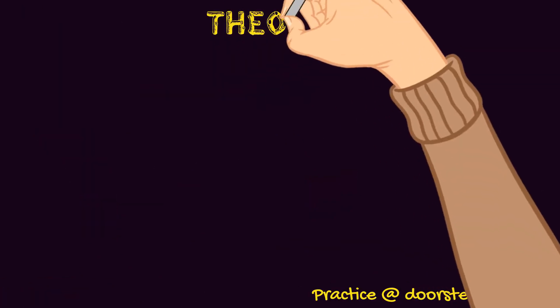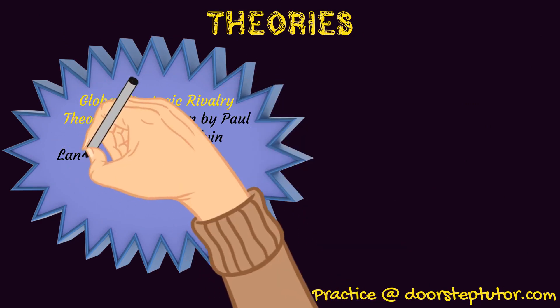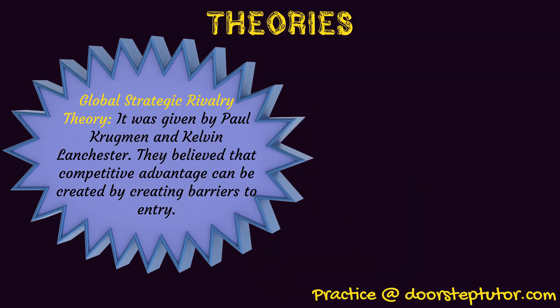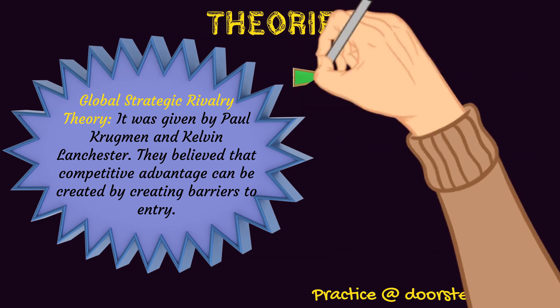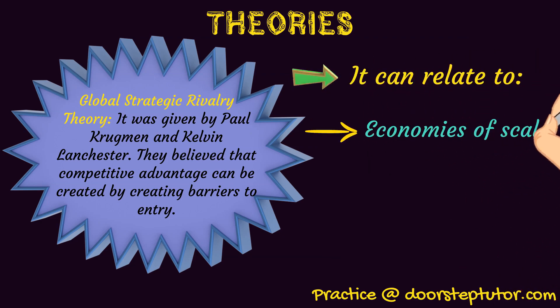The last one is the Global Strategic Rivalry Theory. It was given by Paul Krugman and Kevin Lancaster. They believe that a country can gain comparative advantage by creating barriers to entry. This can relate to economies of scale, research and development, and unique business processes. You can create barriers for others by becoming very good at your cost — that is, decreasing your average cost. This is what economies of scale is: the average cost of a product is reduced so much that other competitors are not able to produce at that cost, so it becomes a barrier to entry.